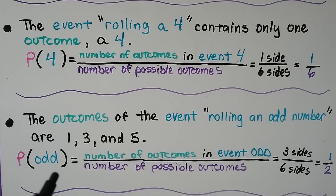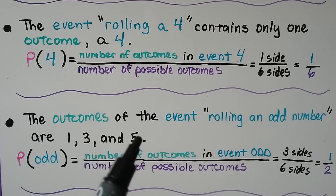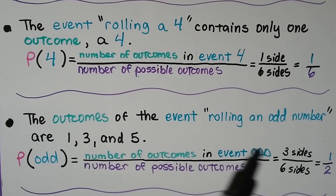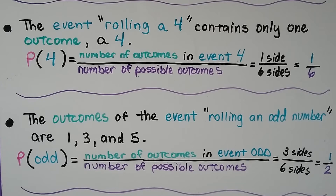The outcomes of the event rolling an odd number — well, there's a 1, 3, and 5 on a die. So the probability of odd is the number of outcomes in the event (3 sides) over the number of possible outcomes, the sample space (6 sides). We'd have a 1/2 chance of rolling an odd number — like a 50% chance. The probability would be 0.5.